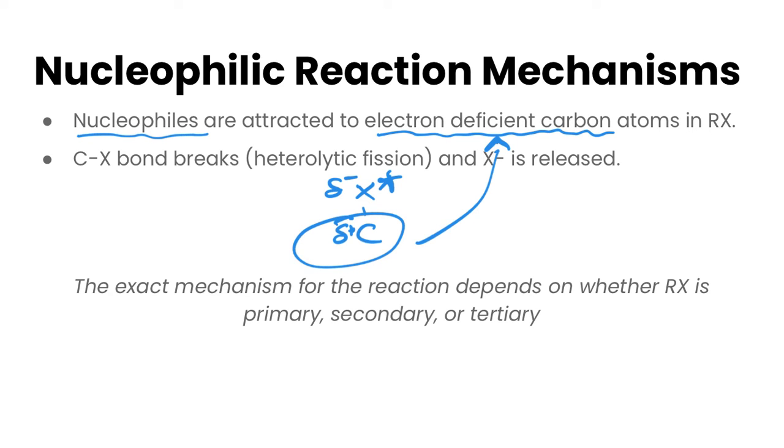And so when it's attracted there, it's able to break the carbon-halogen bond, and that's by heterolytic fission, and this X minus is released.